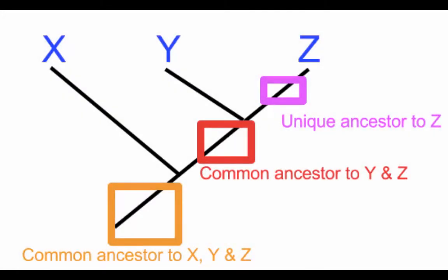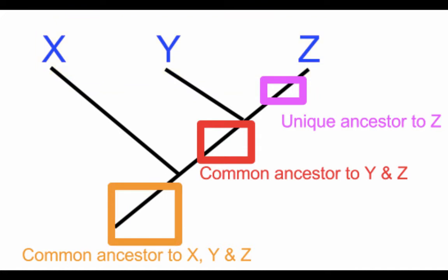That brings us to the idea of common ancestors and unique ancestors. At the bottom of the tree you can see the common ancestor to X, Y, and Z. As you move up the tree, you can see the common ancestor to only Y and Z. There are also unique ancestors not shared between organisms. For example, the unique ancestor to Z is up here. Where would you see a unique ancestor to Y? Where would you see a unique ancestor to X?